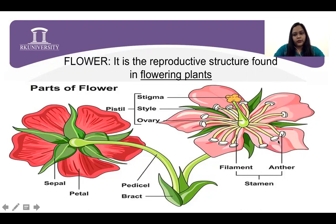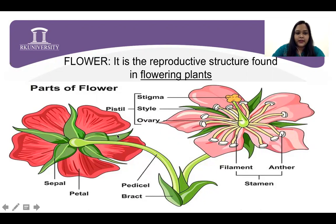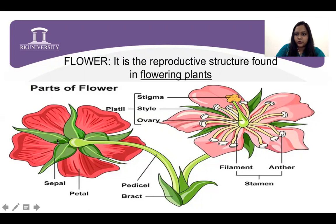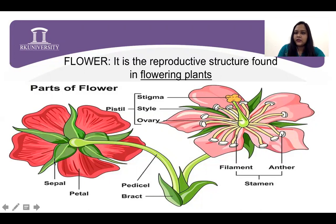The androecium is further divided into two parts. Can you tell me what the outermost whorl of the flower is called? You can drop your answers in the chat box. I will find out how much you know about this. The outermost whorl — the single unit of that outermost whorl — is called sepals.